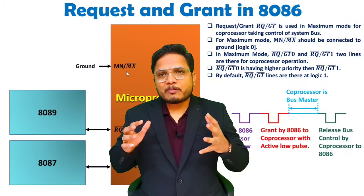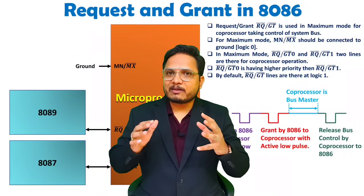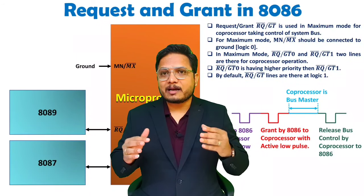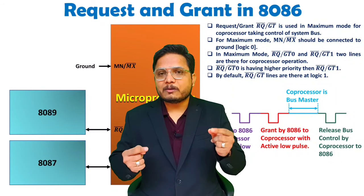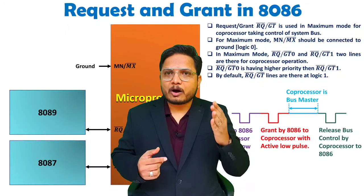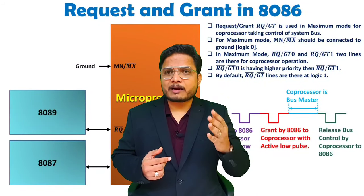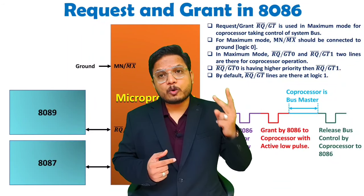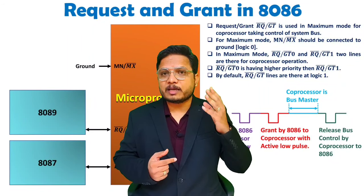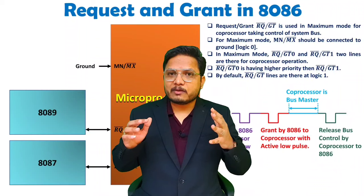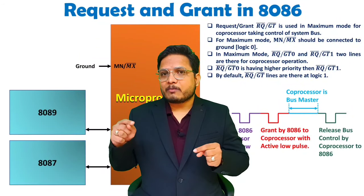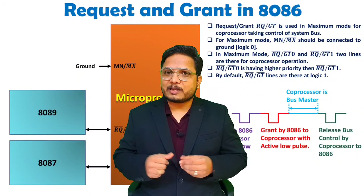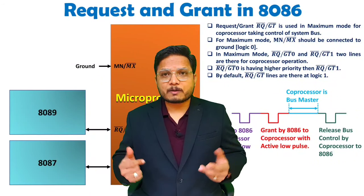I think now you have a fair enough idea of how coprocessors take system bus control using RQ bar/GT bar terminals. There are two terminals, so at most two coprocessors can be interfaced with 8086. If any confusion remains, please post in the comment box so we can communicate. Thank you so much for watching this video.